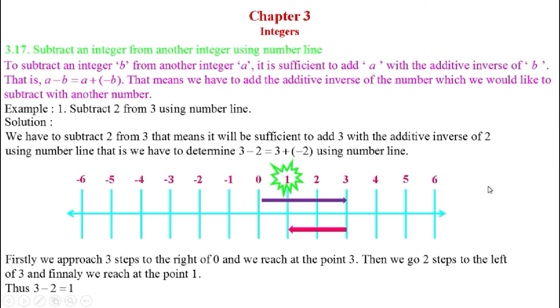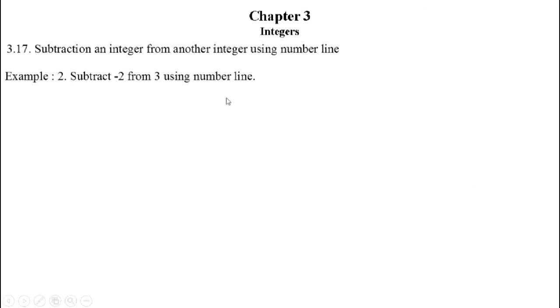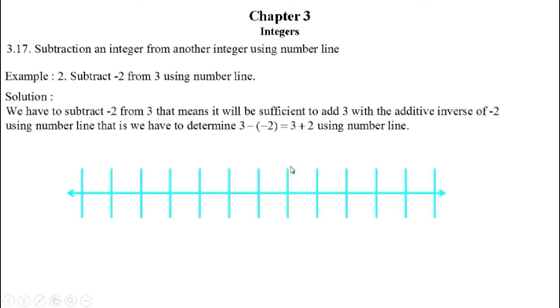Let's look at another example. Subtract minus 2 from 3 using the number line. Since we are subtracting minus 2 from 3, I write 3 minus (minus 2). The additive inverse of minus 2 is 2, so we add 2 with the first number 3.